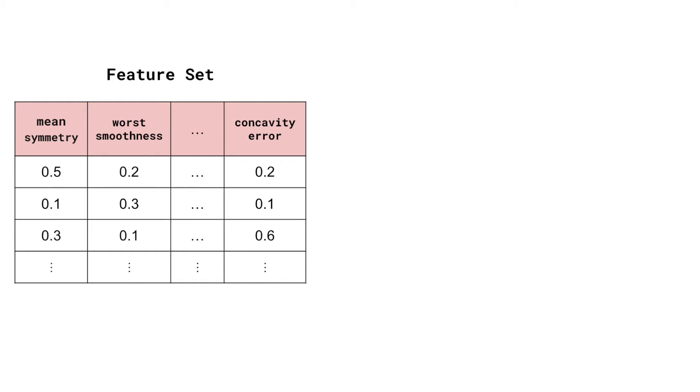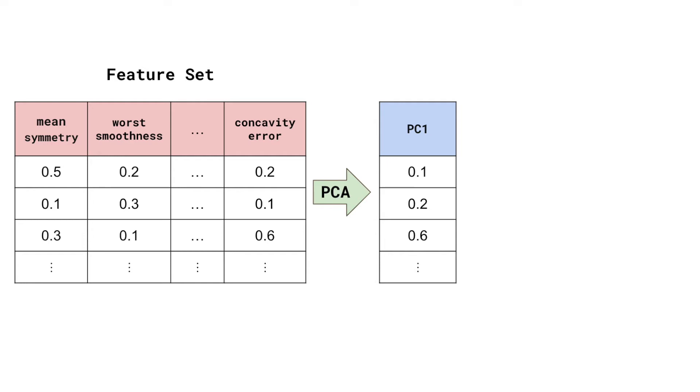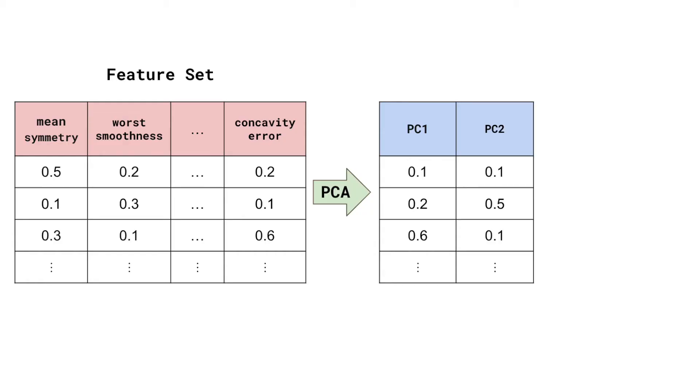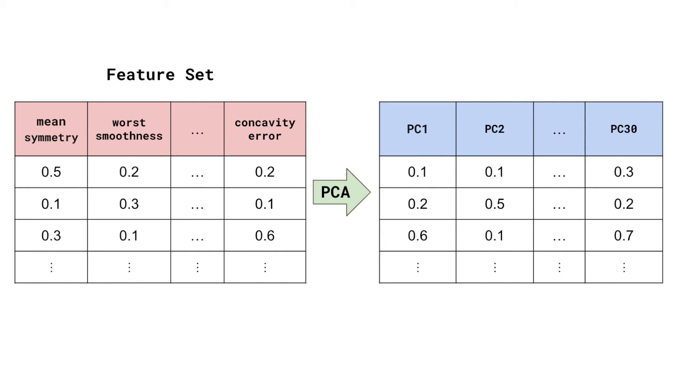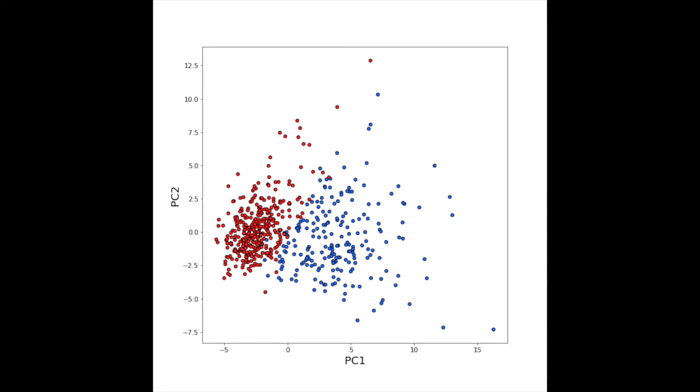But this is only two features. How can we use a similar technique to visualize the classification power of our dataset as a whole? This is where PCA comes in. We won't go into too much detail with how PCA works. All you need to know is that our dataset is transformed into principal components. PC1 is constructed so that it captures as much of the variation in our feature set as possible. Then, PC2 is constructed so that it captures as much of the remaining variation as possible, and so on. The first two principal components can often capture a significant proportion of the total feature variation, and you can think of them as summaries for the entire feature set. So we can create the same plot as before, except now we use PC1 and PC2 instead of individual features.